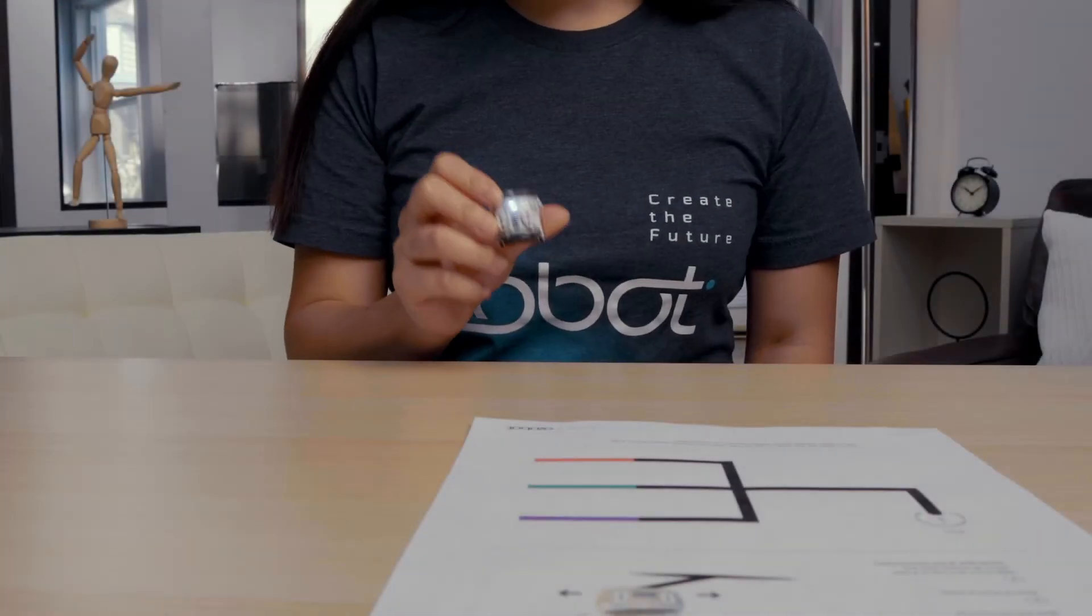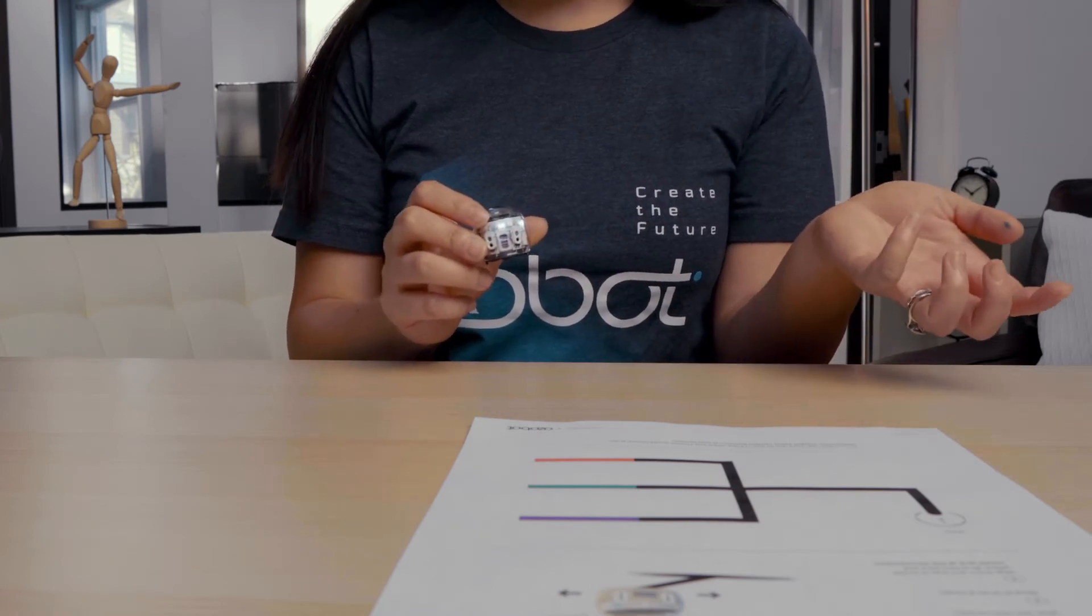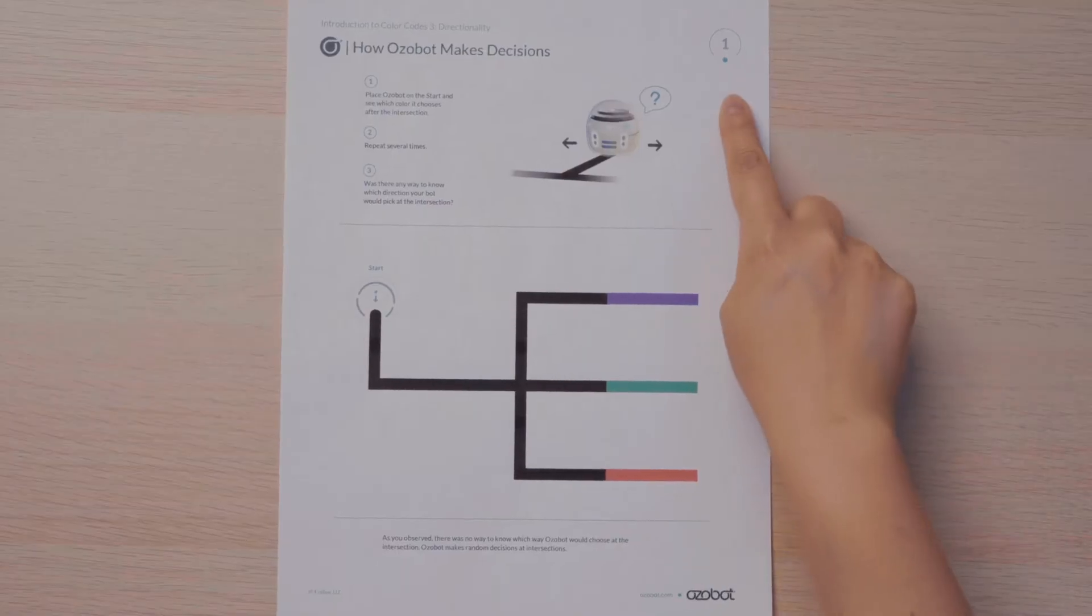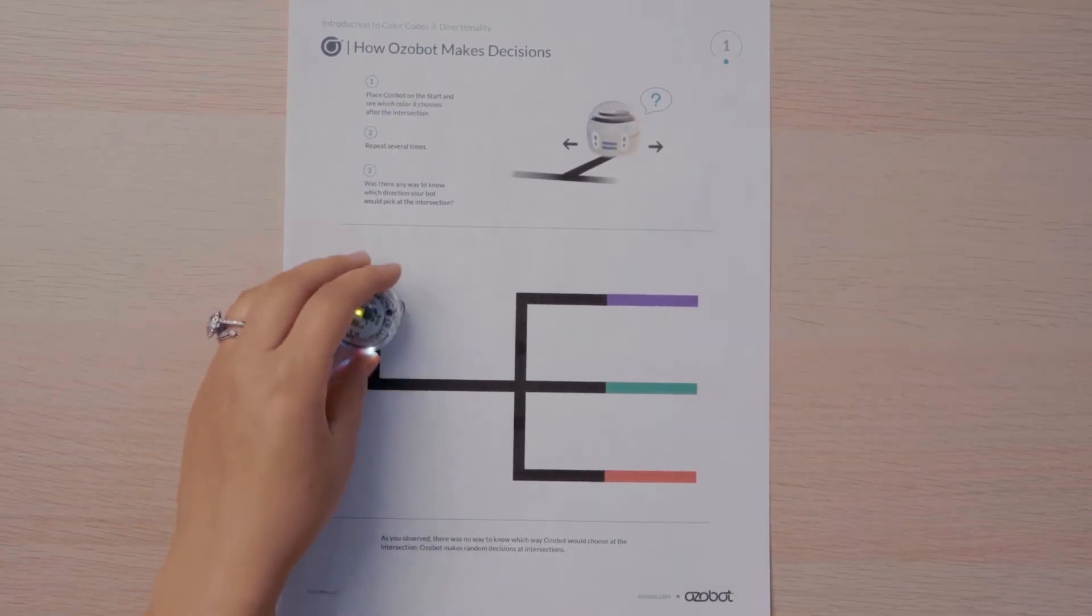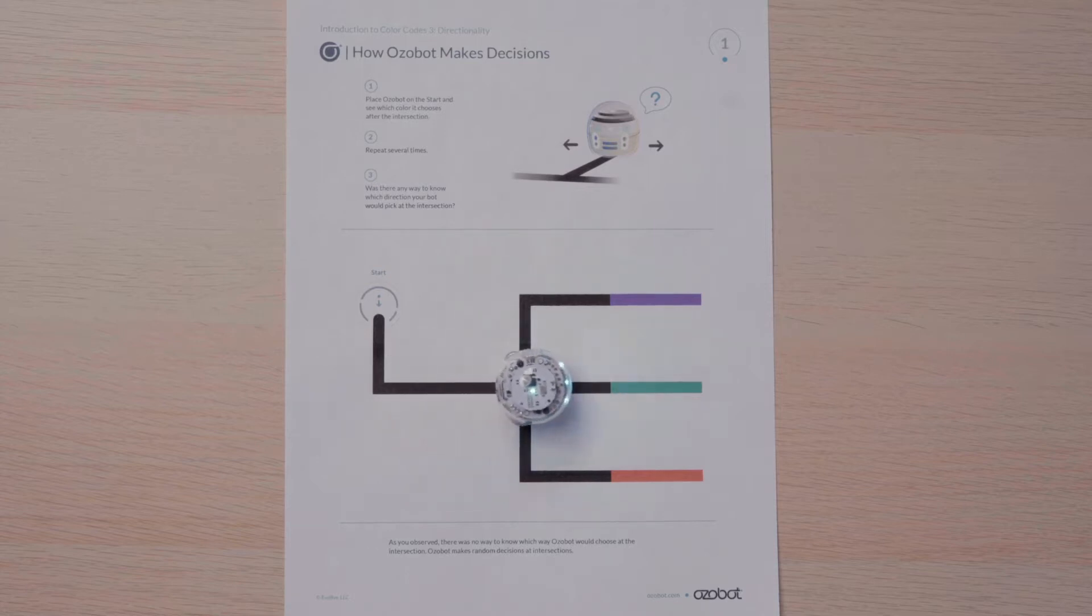You've already learned how to get the bot to follow a line, but what happens when it encounters an intersection? Let's find out. Find page one. Place your bot on start and have it line follow. When it reaches the intersection, notice where it goes.